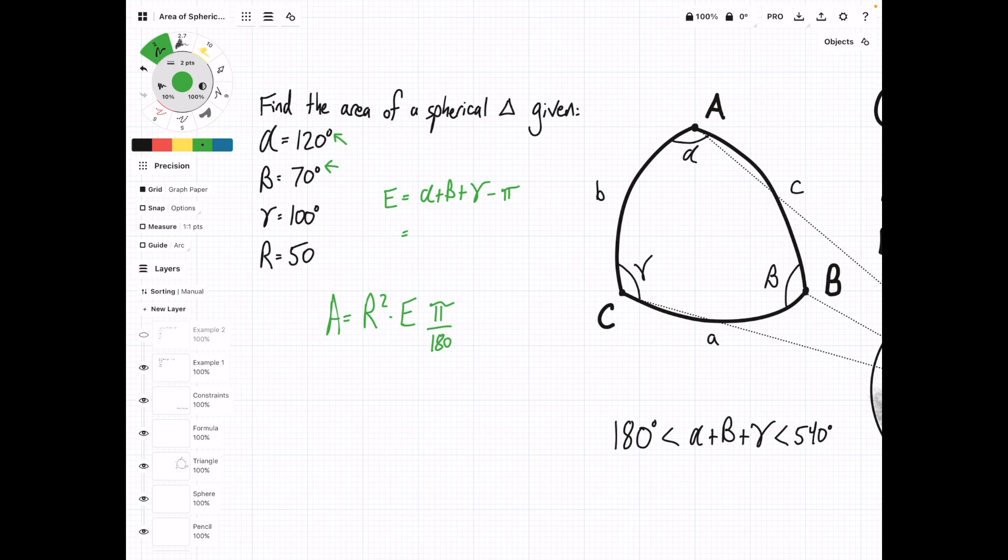We're going to have R squared times the spherical excess times this conversion factor of pi over 180. We can still figure out E in degrees, and then we'll just convert it later on. We'll plug in the values: 120 degrees plus 70 degrees plus 100 degrees minus 180 degrees. This equals 110 degrees.